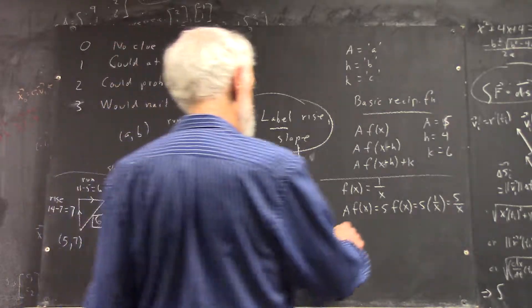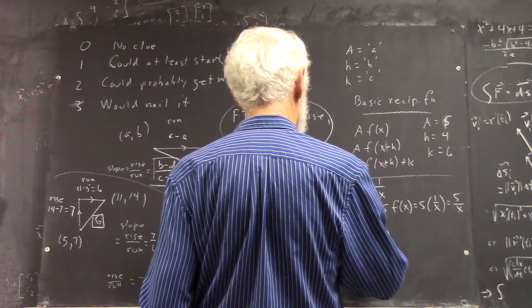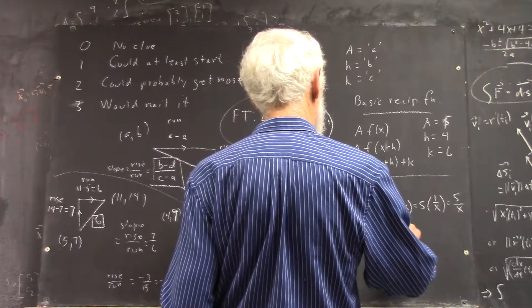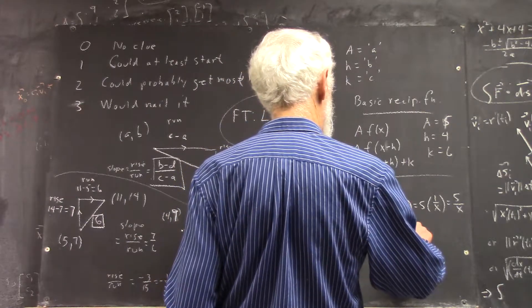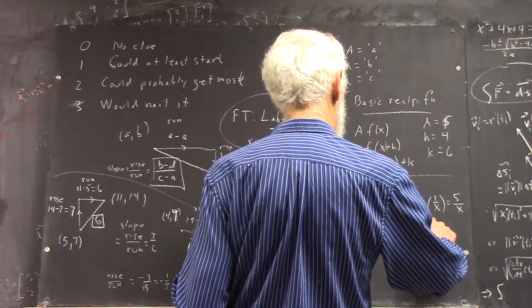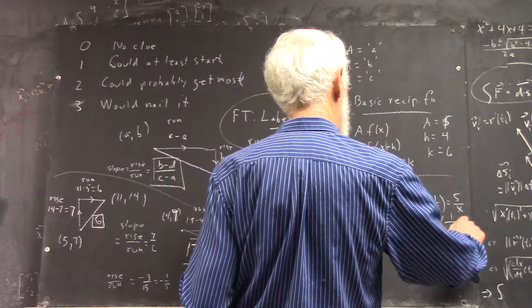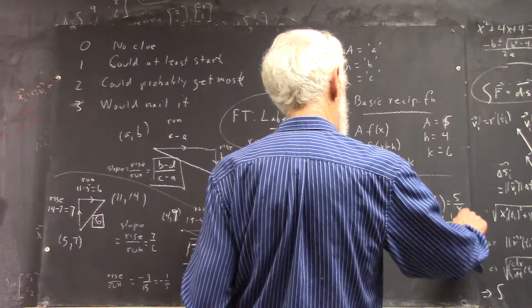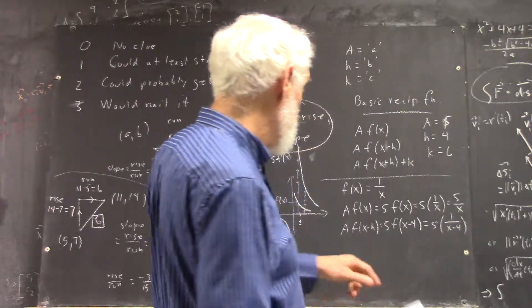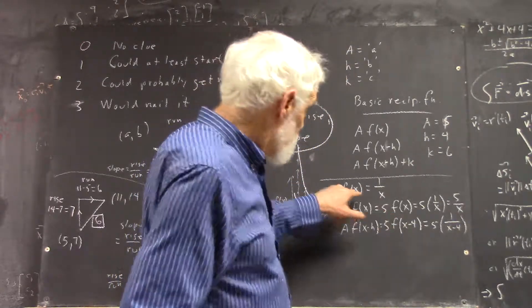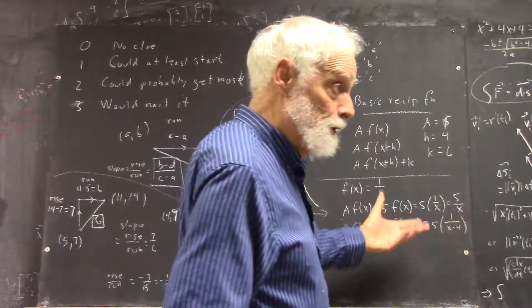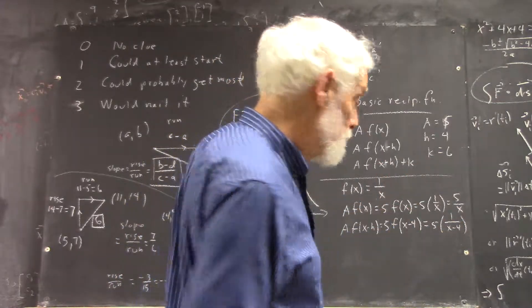If f of x minus 4 is 1 over x minus 4, it's because x minus 4 has replaced x, so it's got to replace this x. Very simple idea. Got to get used to it and practice it.